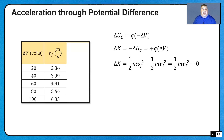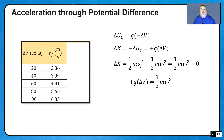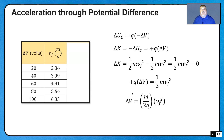The change in kinetic energy is the final kinetic energy, one-half mv-final squared, minus one-half mv-initial squared. But the initial speed is zero, so the change in kinetic energy just equals one-half times the mass times the final speed squared. Setting those two equal, we have q times the potential difference equals one-half times the mass times the final speed squared. Rearranging, the potential difference equals the mass divided by two times the charge, times the final speed squared.